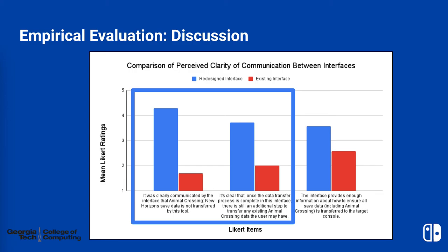The null hypothesis can be rejected on the basis that the redesigned interface more clearly communicates both the fact that the Animal Crossing data is not transferred by this interface and that there are additional steps required to ensure that it is transferred successfully.